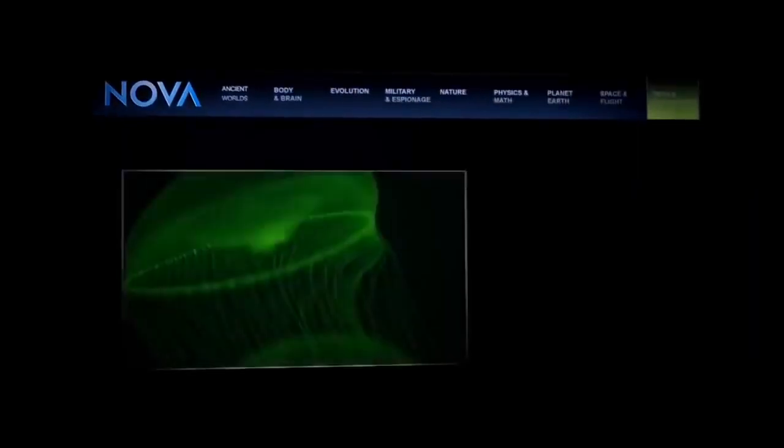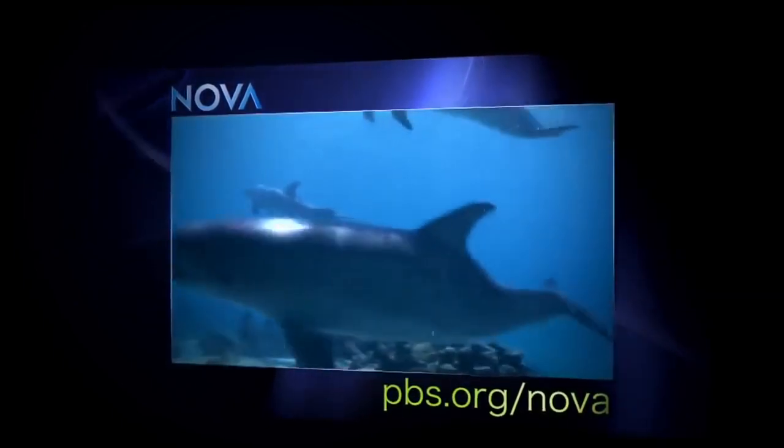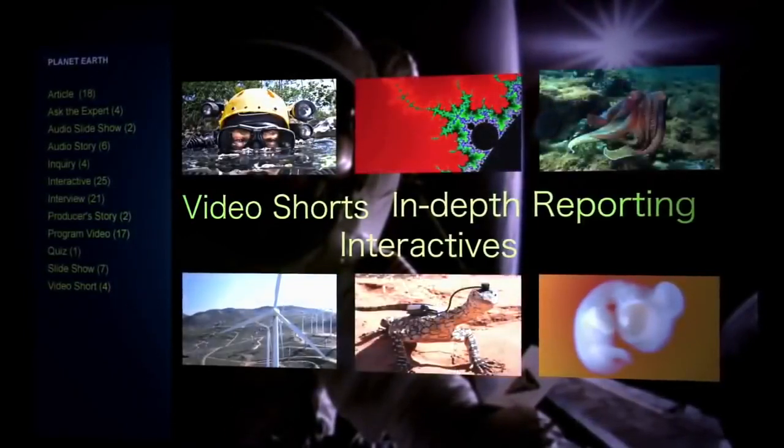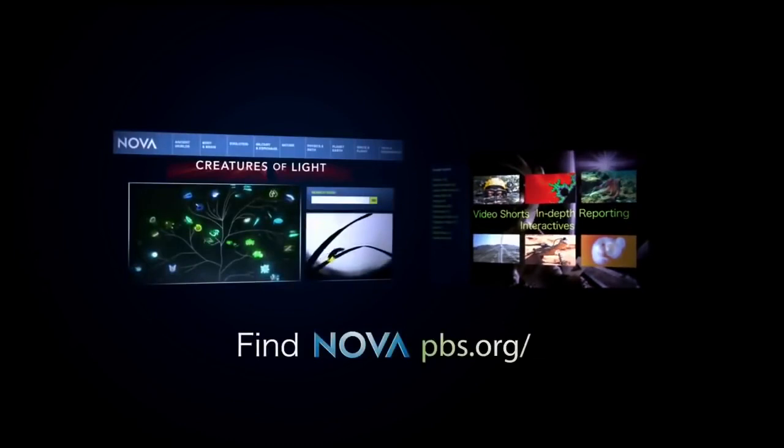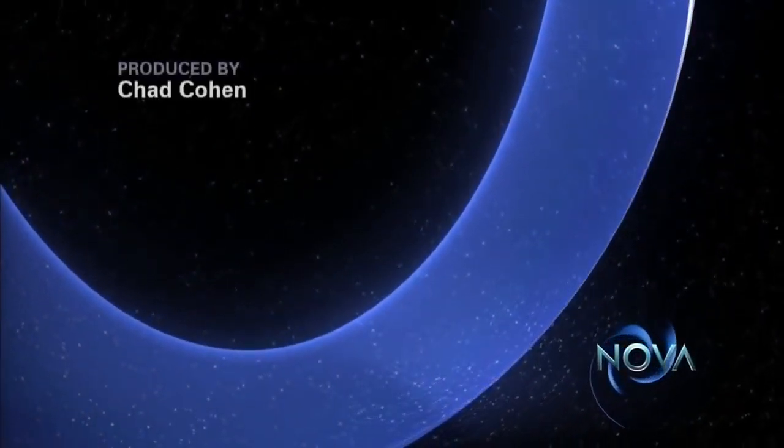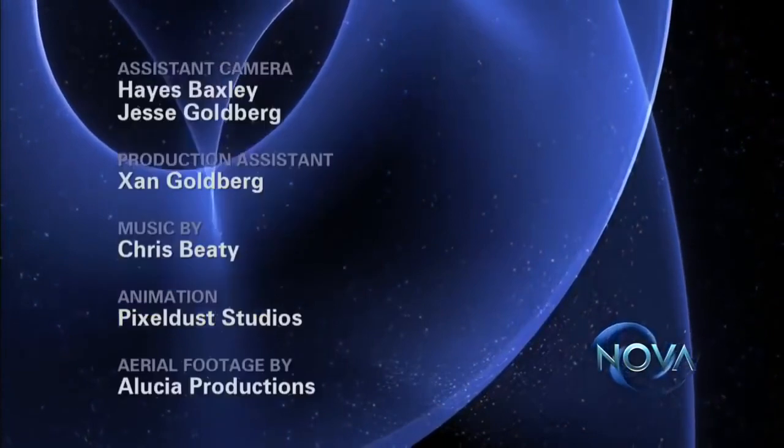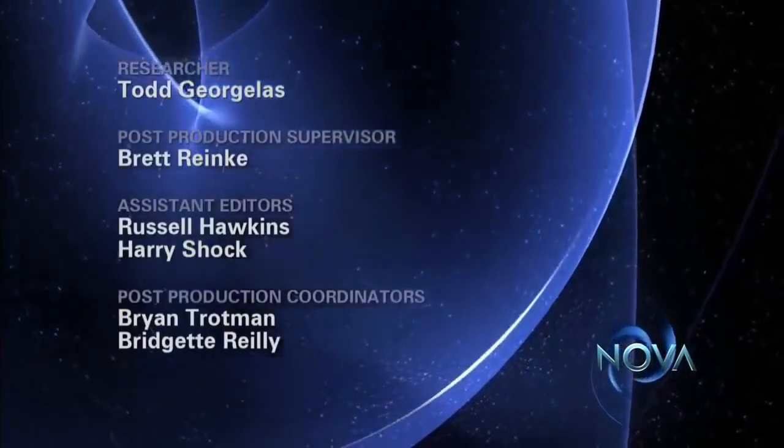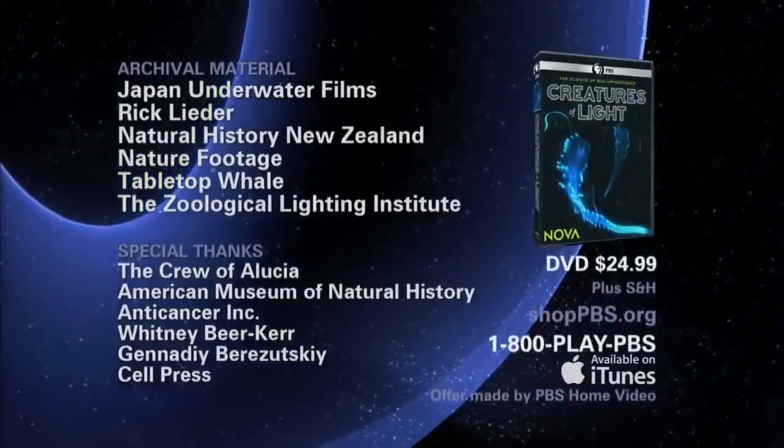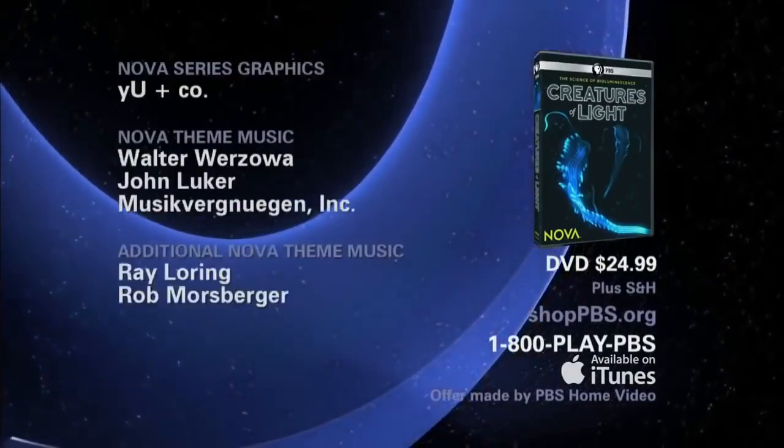The investigation continues online, where you can watch this and other NOVA programs. See how other creatures throughout the animal kingdom have evolved smart ways to communicate, from slime molds to cephalopods to dolphins. And watch a profile of Edith Witter. Also, watch original video shorts, explore in-depth reporting, and dive into interactives. Find us at pbs.org slash NOVA. Follow us on Facebook and Twitter. This NOVA program is available on DVD. To order, visit shoppbs.org or call 1-800-PLAY-PBS. NOVA is also available for download on iTunes.